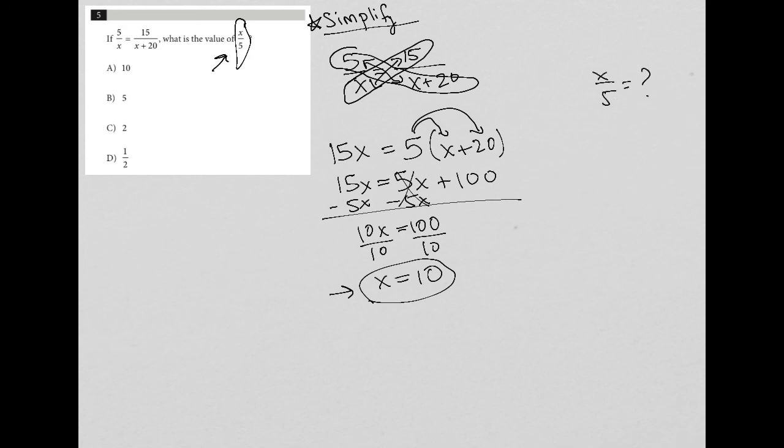Well, we now know that x is 10, so I can just replace that x with 10. So x over 5 becomes 10 over 5, and 10 divided by 5 is 2, and therefore the correct answer is choice C.